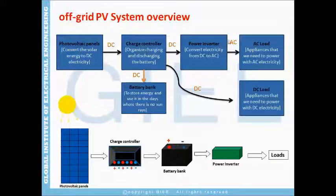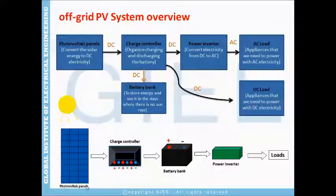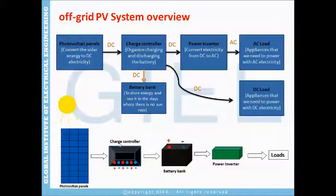We need to convert this electricity from DC direct current to alternating current, so we use a power inverter. Some of our loads use DC current, so we can get this electricity directly from the charge controller.